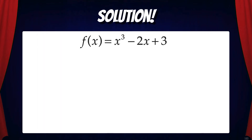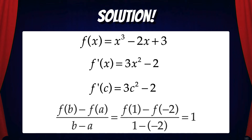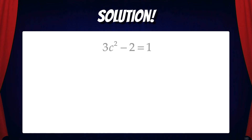Here we have f(x) equals x cubed minus 2x plus 3, and we're going to find the derivative. f prime of x equals 3x squared minus 2. Now we'll substitute c for x and we get 3c squared minus 2. Then we'll find the average rate of change on the interval negative 2, 1 — that gives us 1 when we do the arithmetic. Next, we'll set f prime of c equal to that average rate of change.